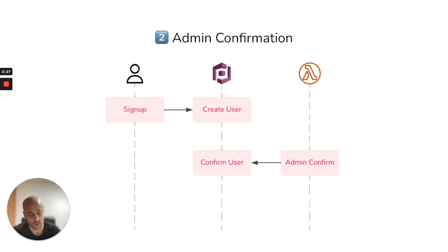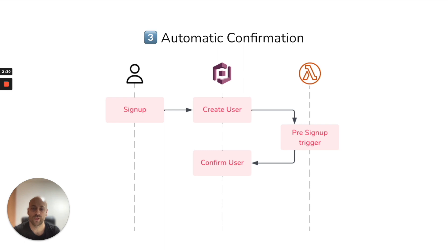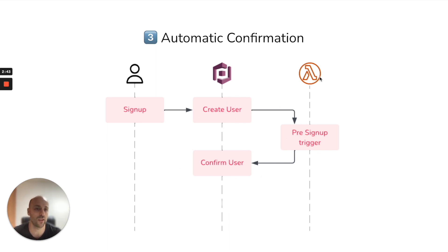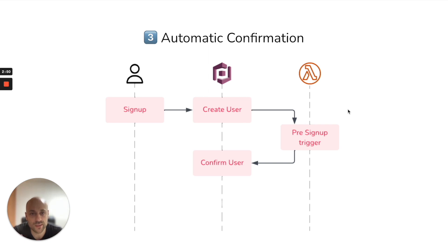The third way to confirm a user is automatic confirmation. Just after a user is created, Cognito confirms the user with a trigger function. The question is: when do I need this kind of automatic confirmation?